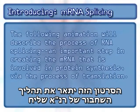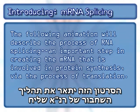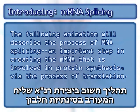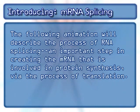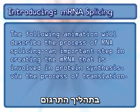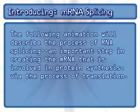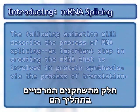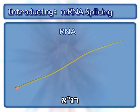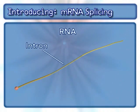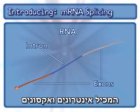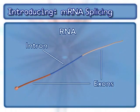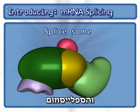The following animation will describe the process of RNA splicing, an important step in creating the mRNA that is involved in protein synthesis via the process of translation. Key factors in this process include RNA possessing introns and exons, and the spliceosome.